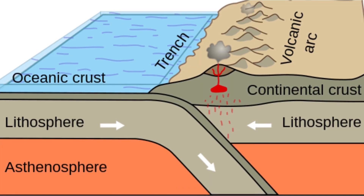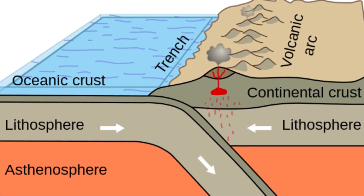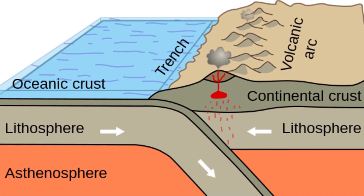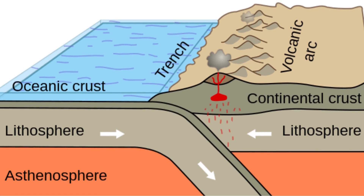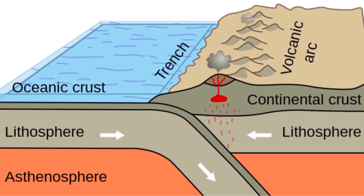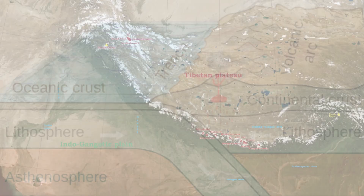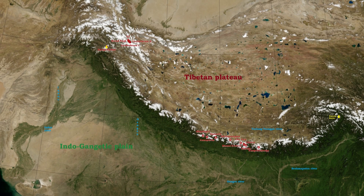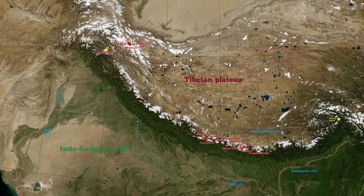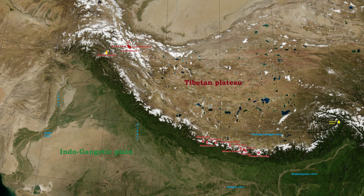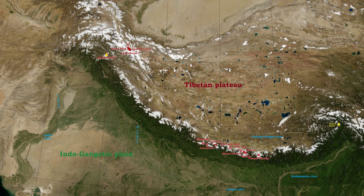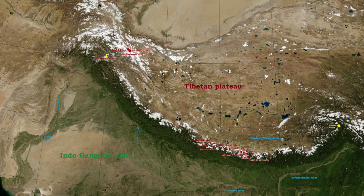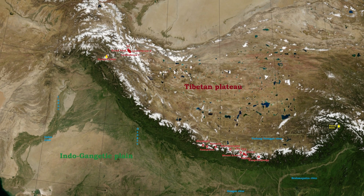Convergent boundaries are where plates collide. When two plates meet, they can either collide head-on, creating intense pressure and mountain ranges like the Himalayas, or one plate can slide beneath the other, forming subduction zones.